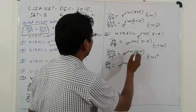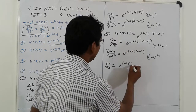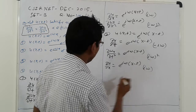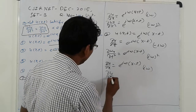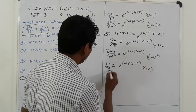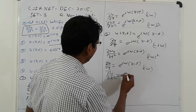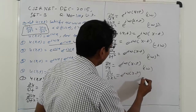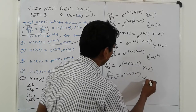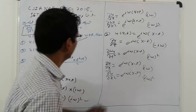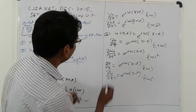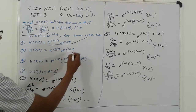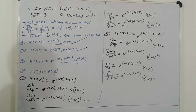∂u/∂x equals e raised to iω(x−t) into iω. And ∂²u/∂x² equals e raised to iω(x−t) into (iω)². So those values are equal, which means option 2 is also correct.